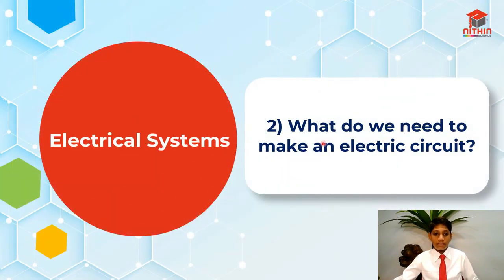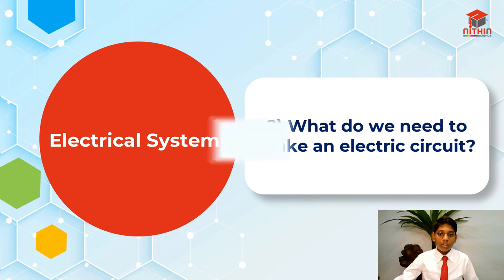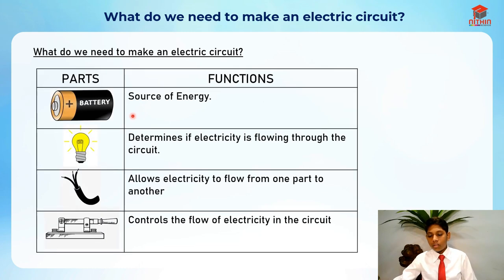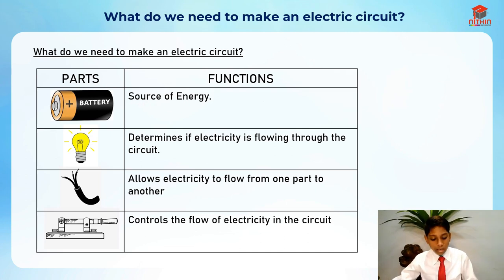For the second segment, I'll be going through what we need to make an electric circuit. First, we need a battery. The battery is basically the source of energy. The battery has two sides — one is the positive side and one is the negative side.